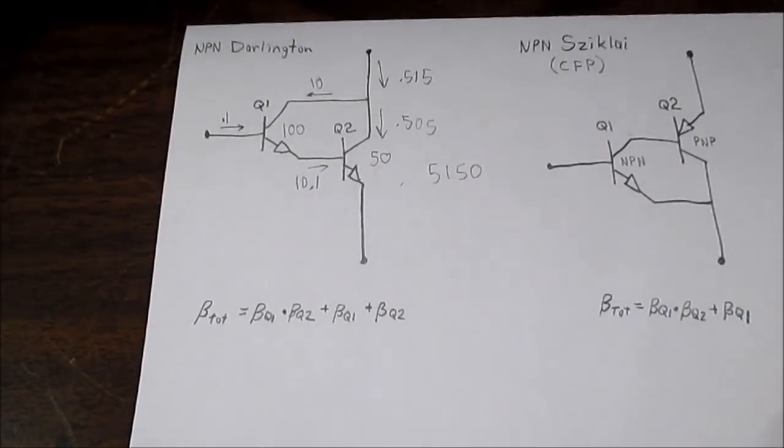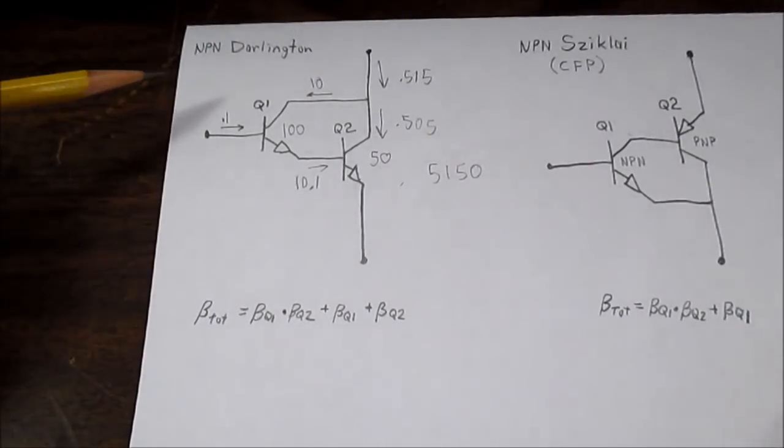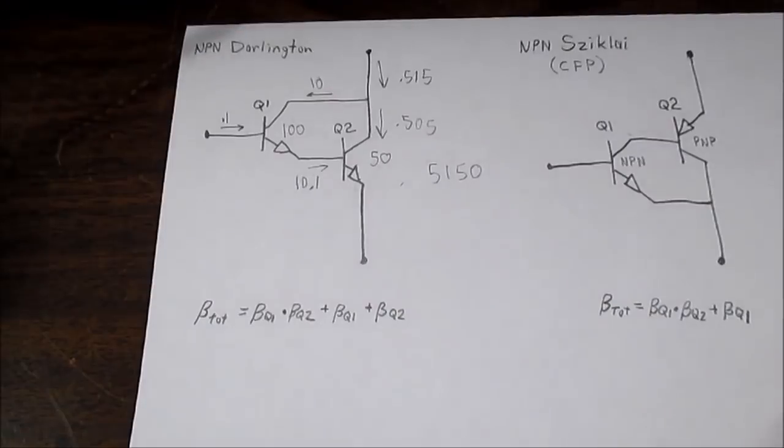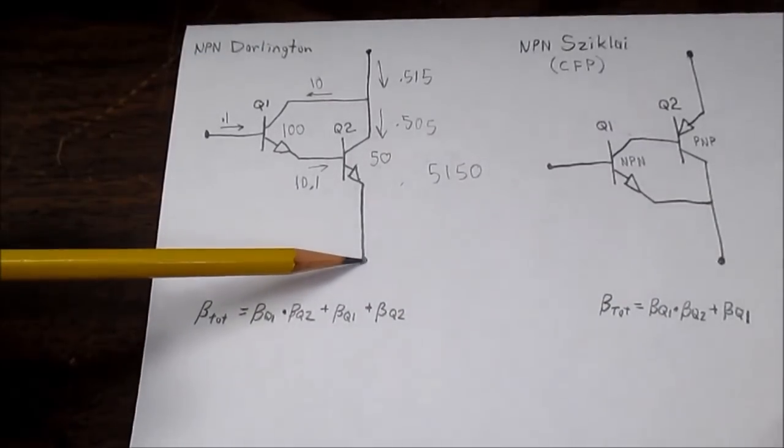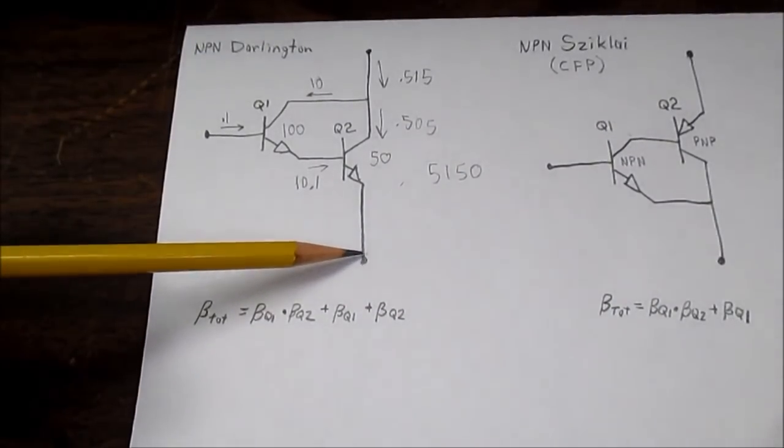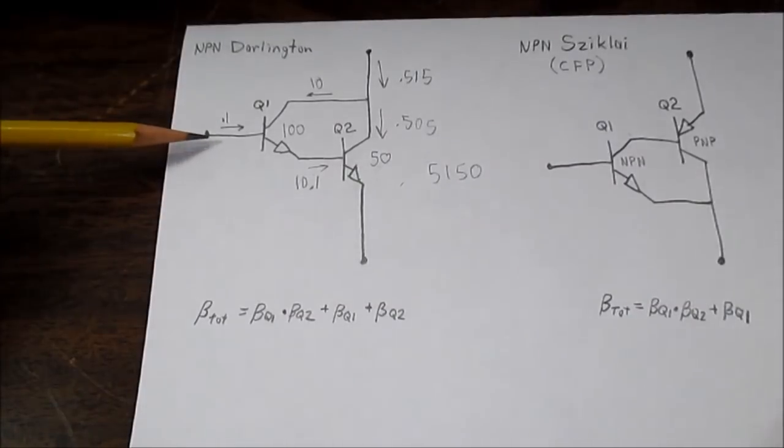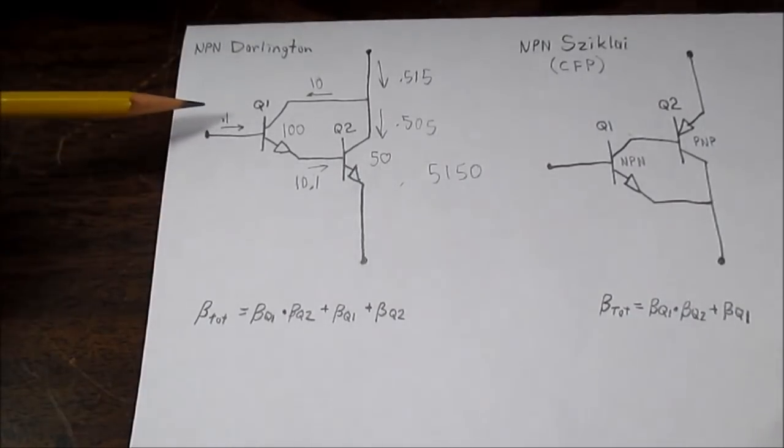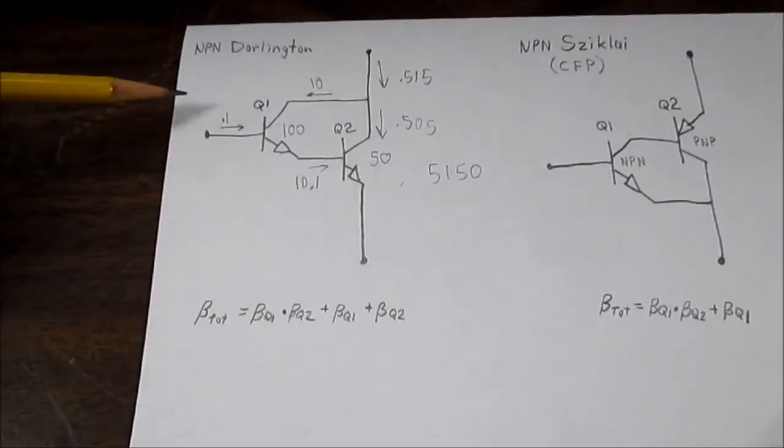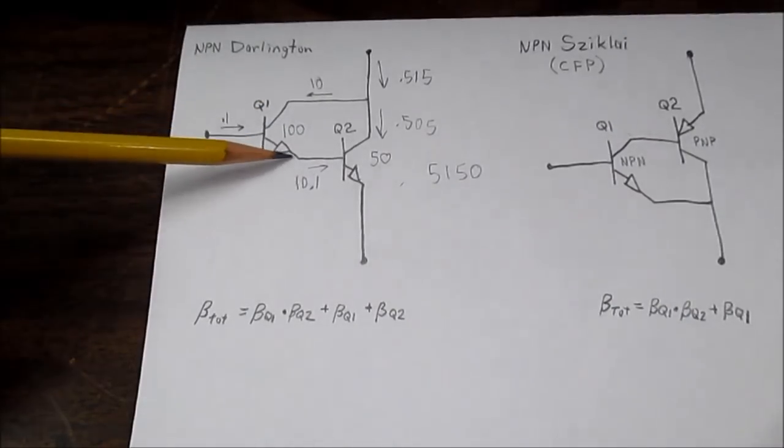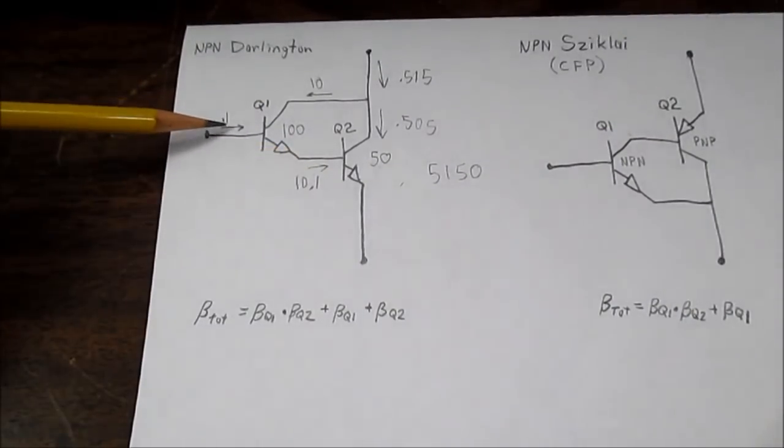Now let's take a look at a few interesting aspects of this Darlington circuit. For one thing, if we consider this our zero volt reference point, it's going to take 1.3 volts to turn this circuit on because you have two base-emitter junctions to pass through.